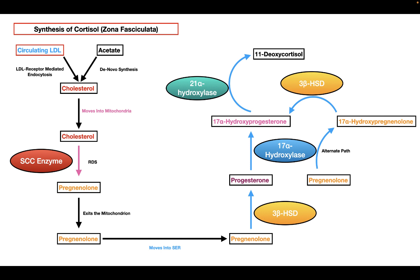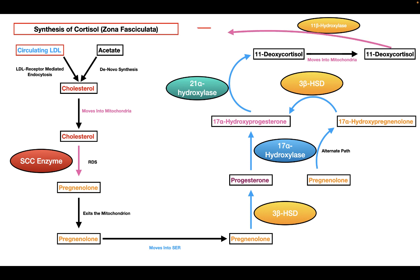The 11-deoxycortisol then moves out of the smooth endoplasmic reticulum and into the mitochondria, where it undergoes one final reaction catalyzed by the enzyme 11-beta-hydroxylase. 11-beta-hydroxylase catalyzes the conversion of 11-deoxycortisol into cortisol. This is how the zona fasciculata forms cortisol, with some enzymes working in the mitochondria and others in the smooth endoplasmic reticulum.